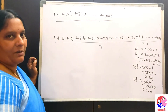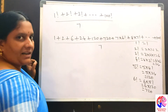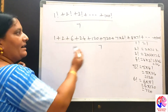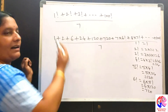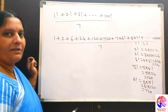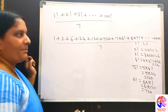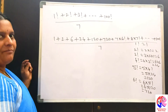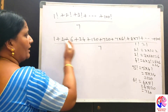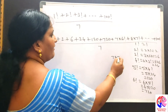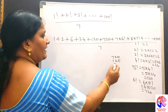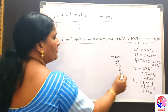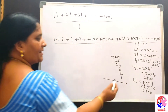720 is not divisible by 7. 120 is not divisible by 7. Similarly, 24, 6, 2, and 1 — all these numbers are not divisible by 7. Now we are going to find what is the remainder when this sum is divided by 7. We have to find the sum of all these numbers: 720 plus 120 plus 24 plus 6 plus 2 plus 1.